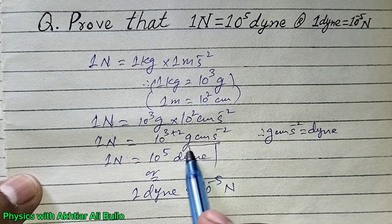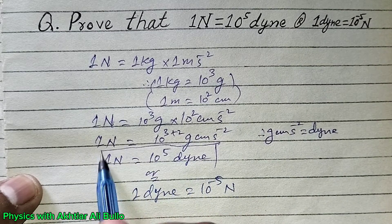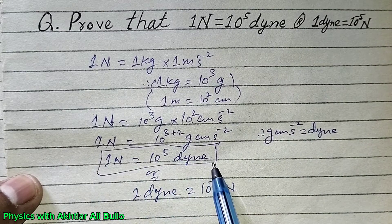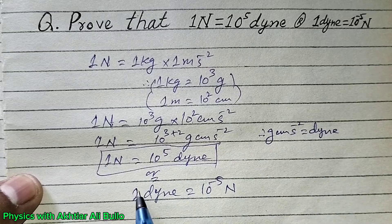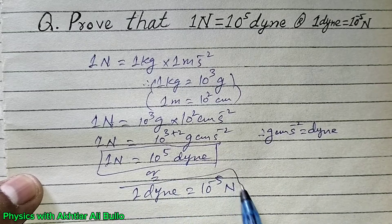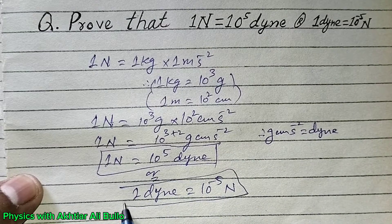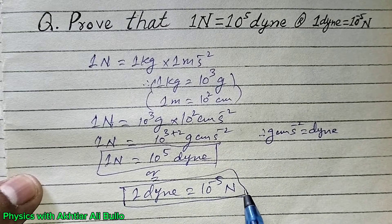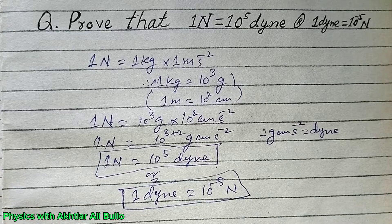So to summarize: 1 newton is equal to 10 raised to the power 5 dyne, and 1 dyne is equal to 10 raised to the power minus 5 newton.